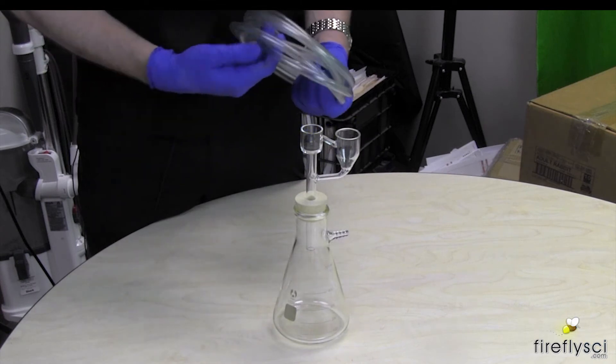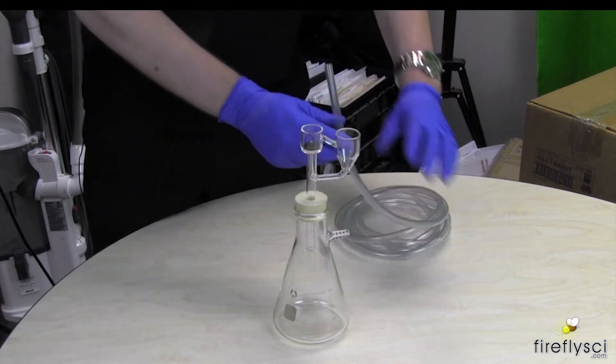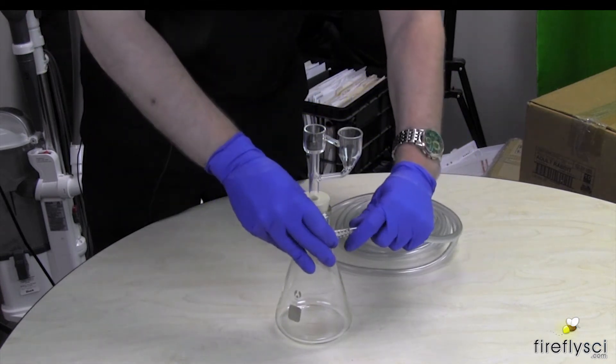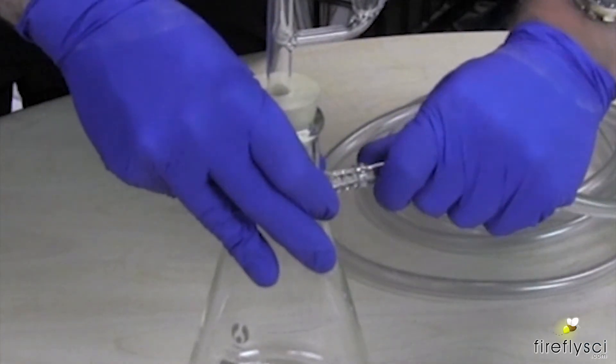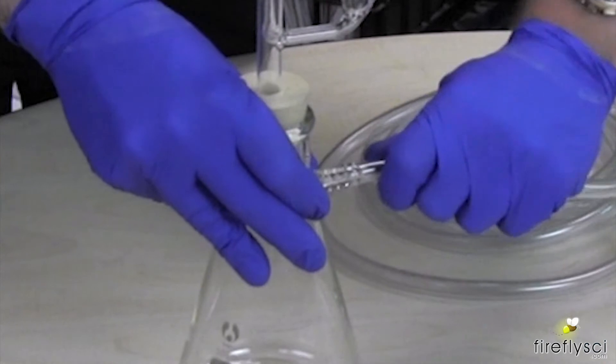In step number two, we're going to take our tubing and we're going to connect it first to the flask here just by gently pushing it on. You don't have to push it on all the way, just as long as it's tight enough to make a seal.